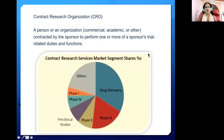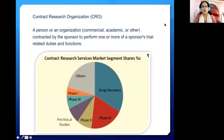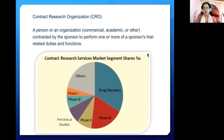A CRO — Contract Research Organization, sometimes also called Clinical Research Organization — is a person or organization, commercial, academic, or otherwise, contracted by the sponsor to perform one or more of the sponsor's trial-related duties and functions. The pharma company, as the sponsor, can hire a CRO to conduct clinical trial-related activities including drug discovery, Phase 1, Phase 2, Phase 3, pre-clinical work, and many other services.